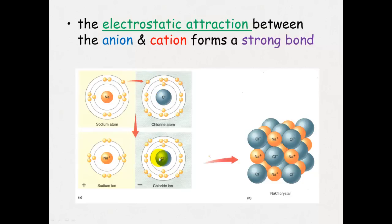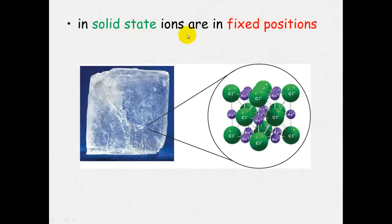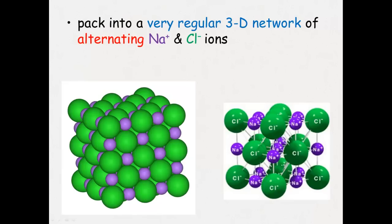The positive sodium ion and negative chloride ion form a crystal lattice structure of alternating positive, negative, positive, negative. This is what the structure looks like — a lattice structure seen in a crystalline solid, like a grain of salt. In a solid state, these ions are in fixed positions and cannot move because of the strong electrostatic attraction. They are packed into very regular three-dimensional networks of alternating positive and negative ions, very tightly packed.